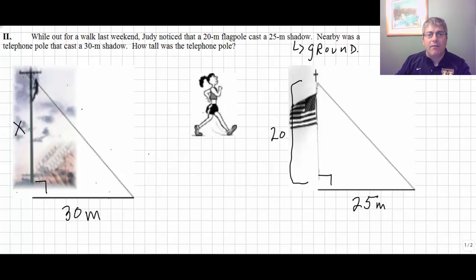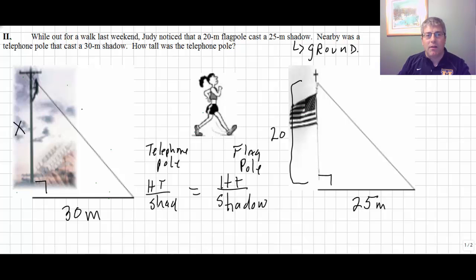So, really we have, we're going to have a couple ratios or we're going to have a proportion. We got our telephone pole and we have our flagpole. And really we've got the height is to the shadow. And then on the flagpole side, if we're going to be consistent, we have that the height of the flagpole is to its shadow. So, for the telephone pole's height to the telephone pole's shadow is to the flagpole's height to the flagpole's shadow. So, x is to 30 as 20 is to 25.